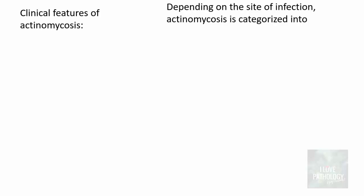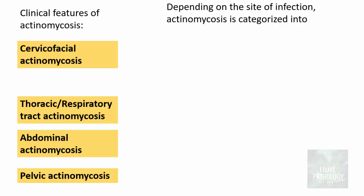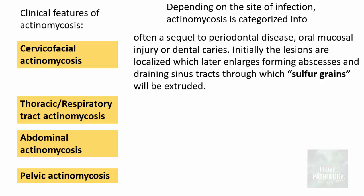Now let us move on to understand the concepts of actinomycosis. What are the clinical features? The clinical features depend on the site of infection. Actinomycosis is categorized into cervicofacial actinomycosis, thoracic or respiratory actinomycosis, abdominal actinomycosis, and pelvic actinomycosis. Cervicofacial actinomycosis is often a sequel to periodontal disease, oral mucosal injury, or dental caries. Initially these lesions are localized, but as they enlarge they form abscesses, and then there will be draining sinus tracts.